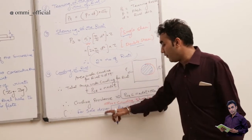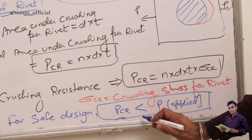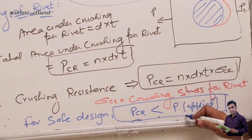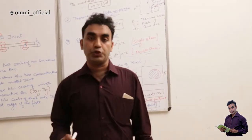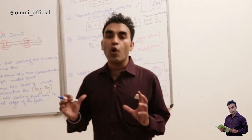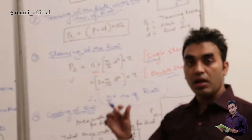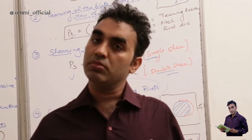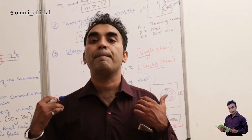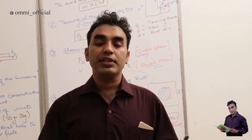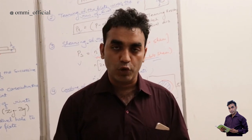When asked about the efficiency of a riveted joint, take the least value among all the forces — Pt, Ps, and Pcr — and divide it by the force on the plate without any rivet holes. This gives the maximum efficiency of the riveted joint. That covers the design of the riveted joint.